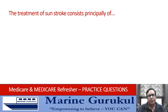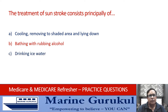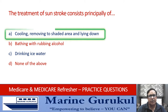The treatment of sunstroke principally consists of: cooling, removing to a shaded area, and lying down; bathing with rubbing alcohol; drinking ice water; or none of the above? The principal treatment is cooling, removing to a shaded area, and making the patient comfortable in the shade. The answer is A.